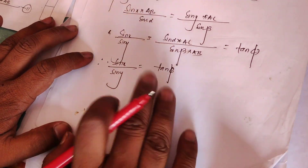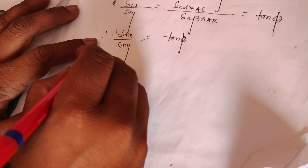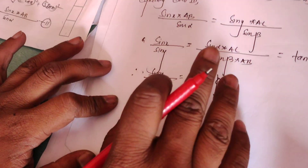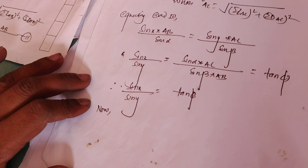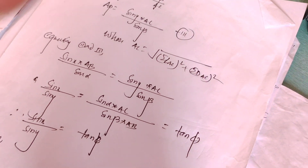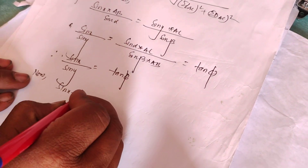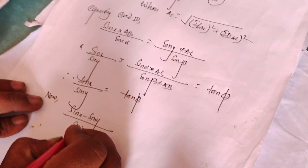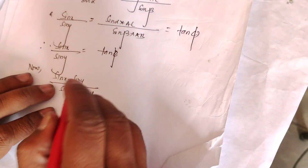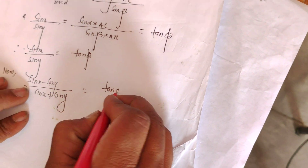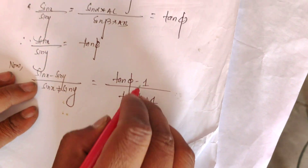tan phi is equal to sin x upon sin y equals tan phi. If we use this value for tan phi, we make it the same. Then: sin x minus sin y over sin x plus sin y. Here we have (tan 5 minus 1) divided by (tan 5 plus 1). This is the same way.